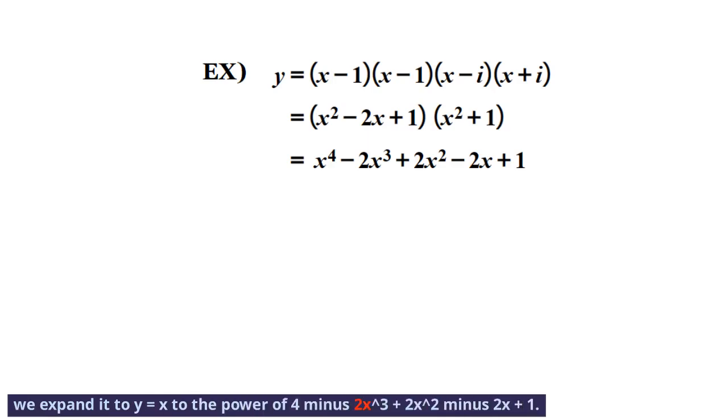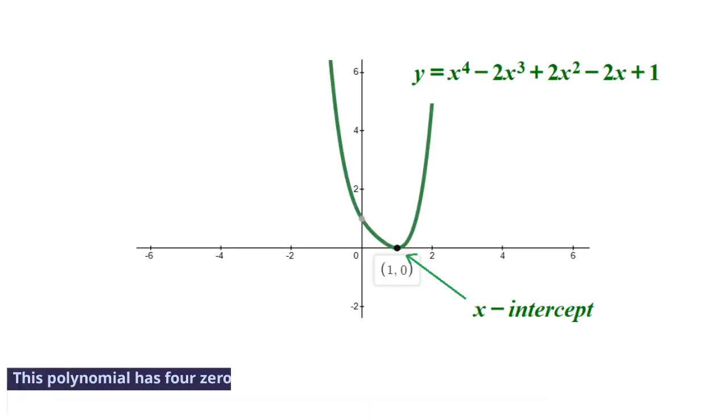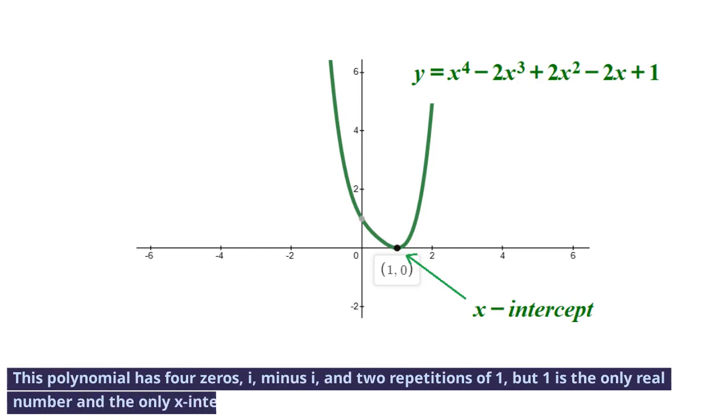We expand it to y equals x to the power of 4 minus 2x cubed plus 2x squared minus 2x plus 1. This polynomial has four zeros: i, minus i, and two repetitions of 1, but 1 is the only real number and the only x-intercept when you graph it.